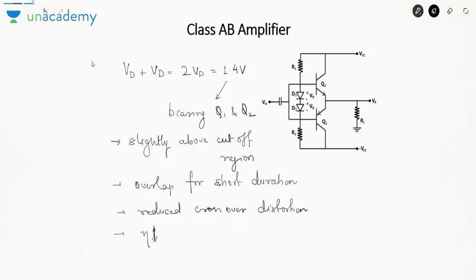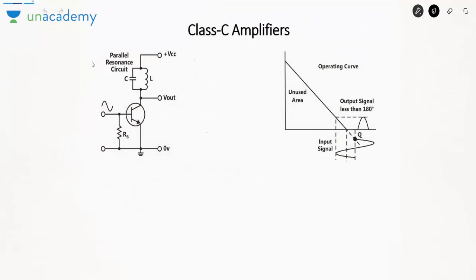Now let's discuss the last amplifier — the class C amplifier. Class C amplifier has the highest efficiency but poorest linearity, meaning its operation is a sort of non-linear operation. It is a common emitter amplifier with a resonant circuit connected at the collector. This resonant circuit has L and C in parallel, so it is called a parallel resonance circuit. Class C amplifier is heavily biased — biased even below the cutoff region — by applying a small negative bias voltage with AC superimposed on it.